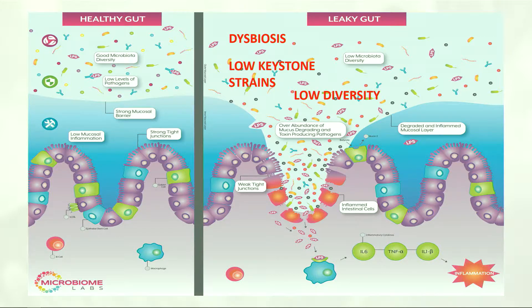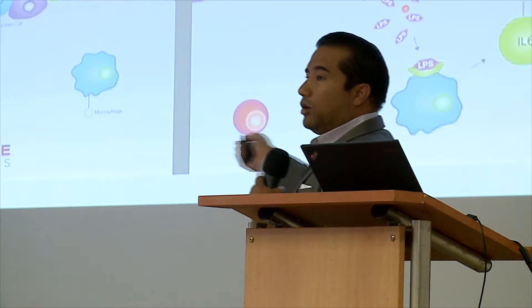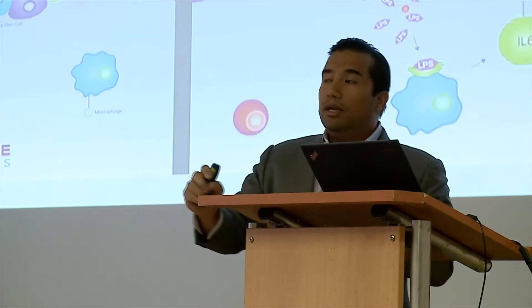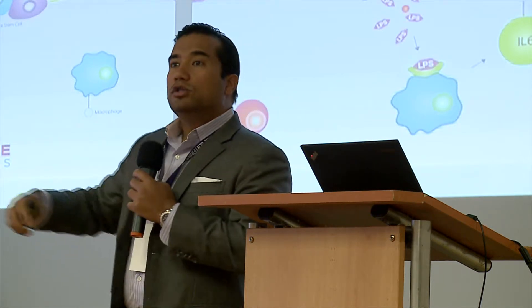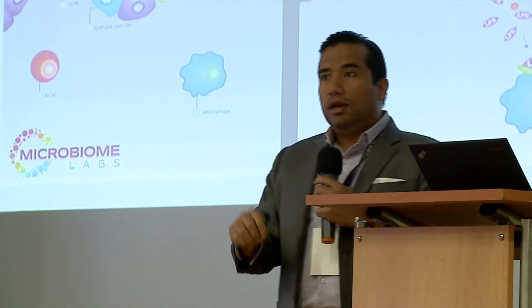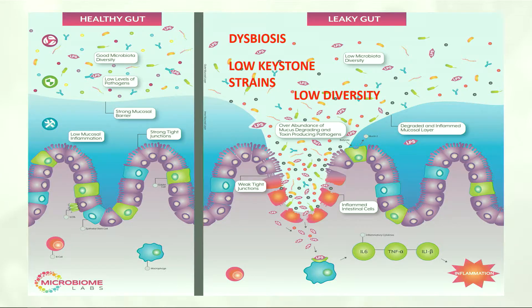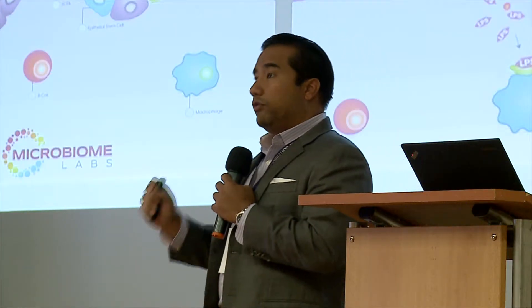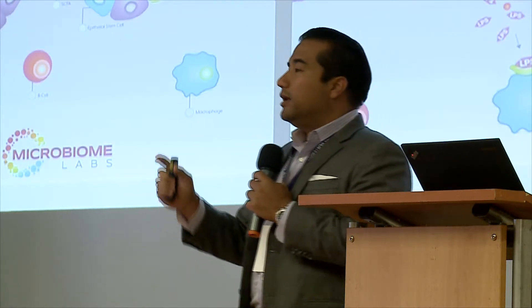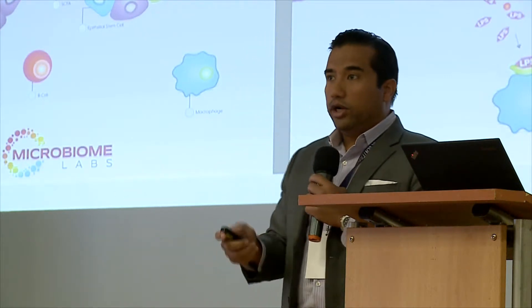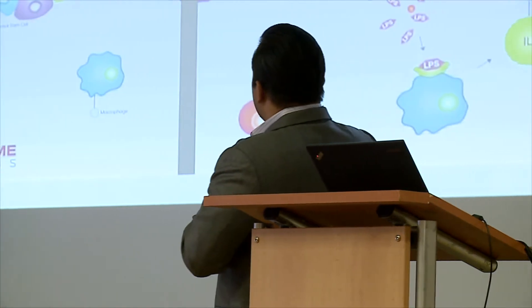Faecalibacterium prausnitzii is a well-known strain inversely correlated with Crohn's, colitis, and other inflammatory bowel conditions. When you end up with low keystone strains, you also end up with low diversity. Diversity in the microbiota is measured two ways: richness — how many different bacteria you have — and uniformity. Uniformity is quite important because you could have many species but if a handful are predominant and the rest are at low levels, you still don't have diversity. Some studies show that microbiota diversity is also associated with longevity.